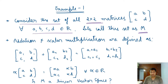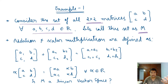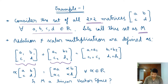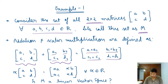To check whether M is a vector space, the first thing we need to do is define the rules for adding two elements of the set and for multiplying a scalar with an element. The rule for addition is element-wise: a₁+a₂, b₁+b₂, c₁+c₂, d₁+d₂.